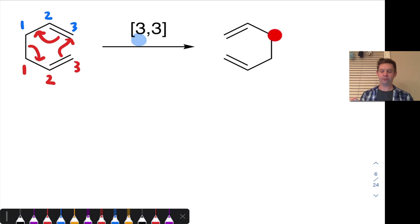And notice that the new sigma bond appears at carbons 3 and 3 on the other side. So let's go ahead and label those. That side, we have carbon 1, 2, 3. And we have carbon 1, 2, 3. And this is called a 3-3 sigmatropic rearrangement because of the linkage between the two carbons labeled 3 in the product.